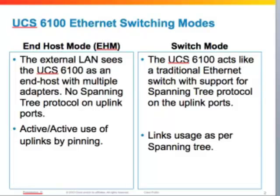There are two Ethernet switching modes in UCS. In end host mode, the external LAN sees the UCS system as an end host with multiple links which are dot1q trunks. No control plane protocol is active on the uplinks towards the LAN, and we have active-active usage of uplinks using a concept of pinning, which I'll touch upon later. In switch mode, STP or spanning tree is active on uplinks and link selection is determined by the spanning tree topology, so links could be blocking.